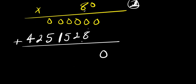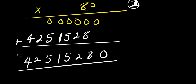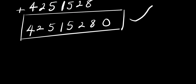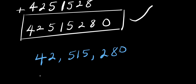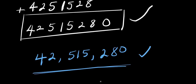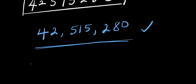Adding up the partial products: 0, then 0 plus 8 is 8; 0 plus 2 is 2; 0 plus 5 is 5; 0 plus 1 is 1; 0 plus 5 is 5; then 42. So the result is 42,515,280. This is our final answer without a calculator — 9 to the power of 8 minus 9 to the power of 6 equals 42,515,280.